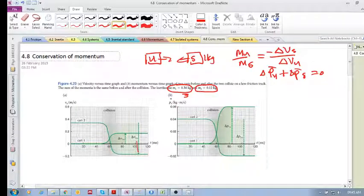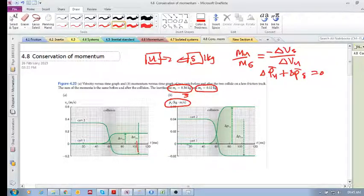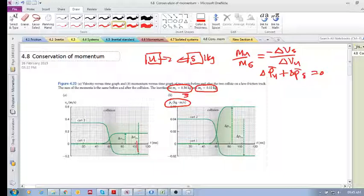But now let's have a look at the momentum change of each cart. Before interaction, the momentum of cart 1 was 0 because its velocity was 0. The momentum of cart 2 was 0.04 kg·m per second. And after interaction, after they collided, they both had a momentum change.